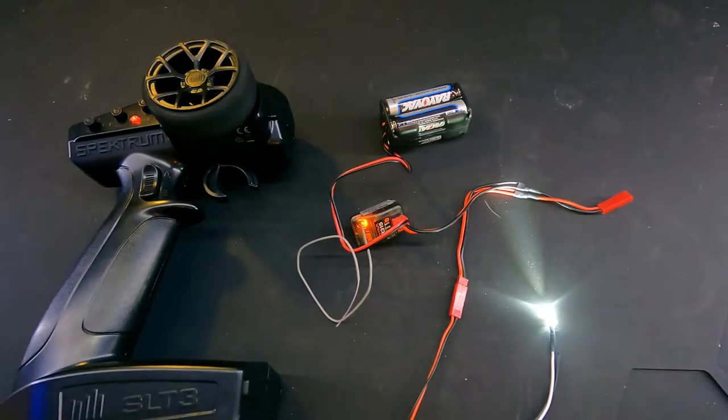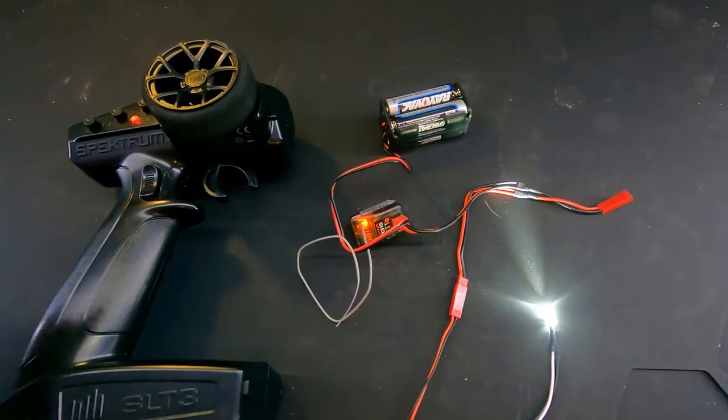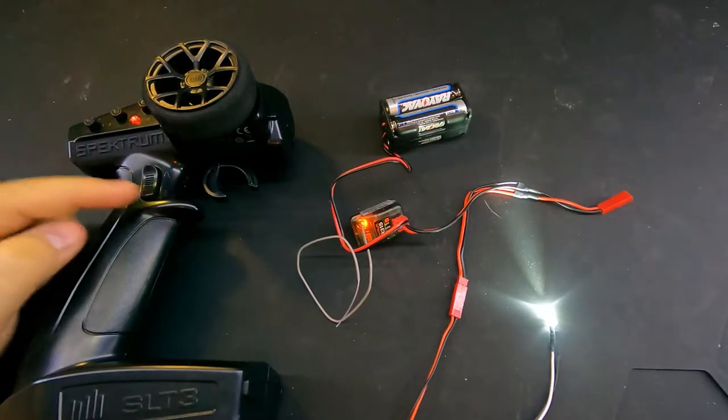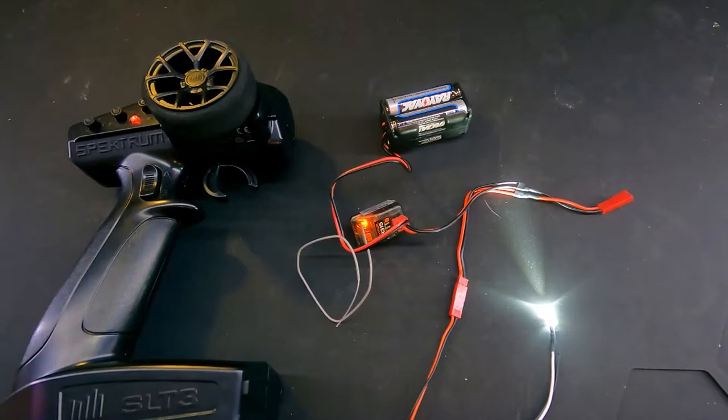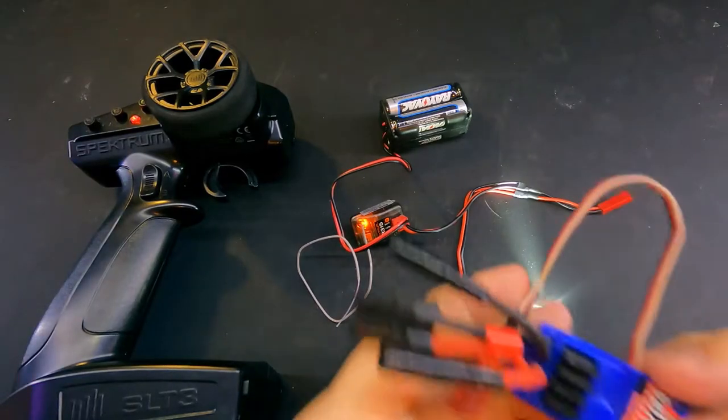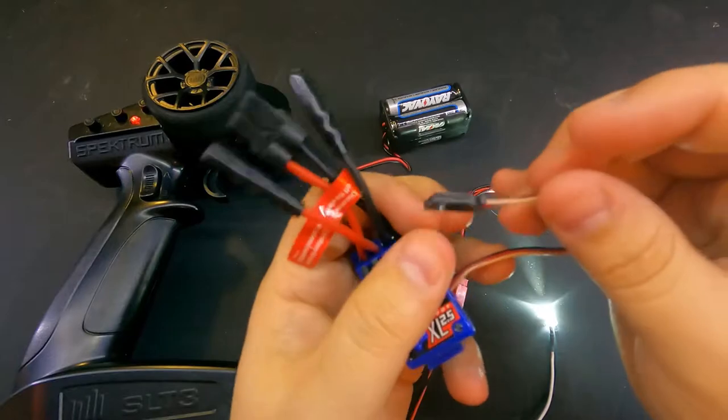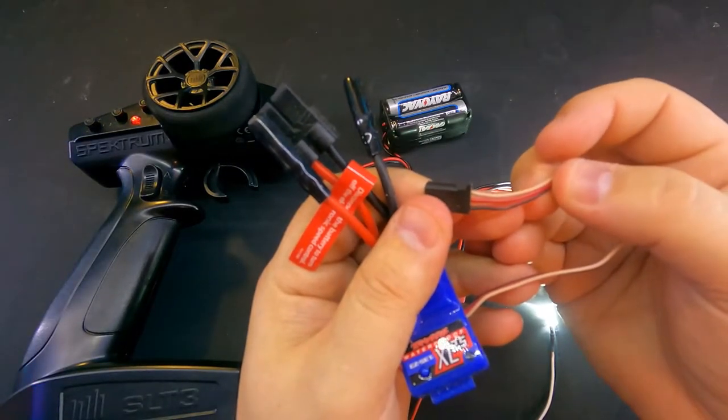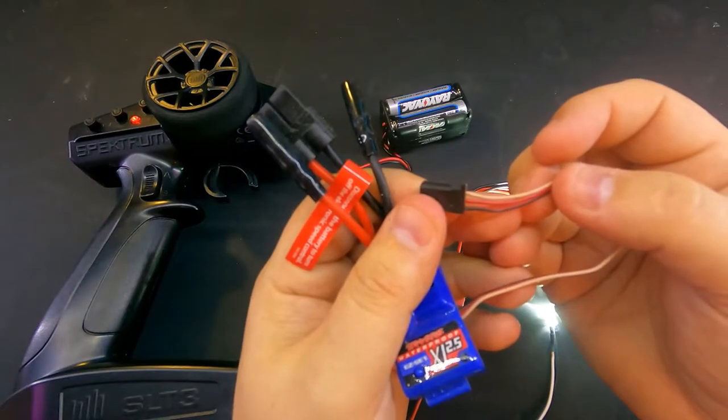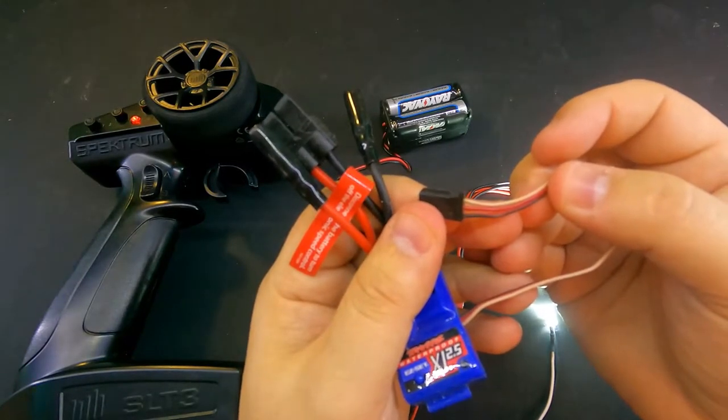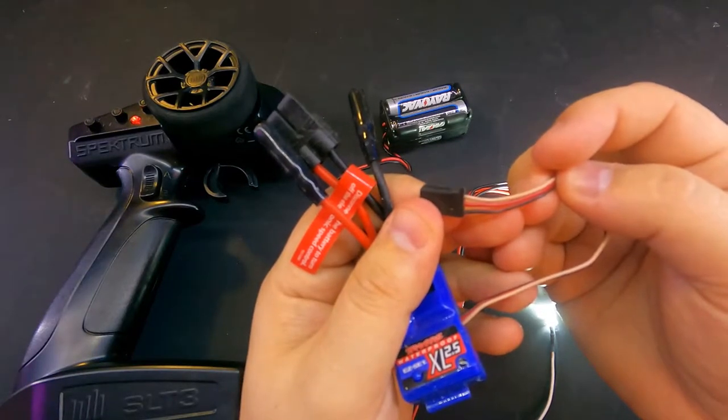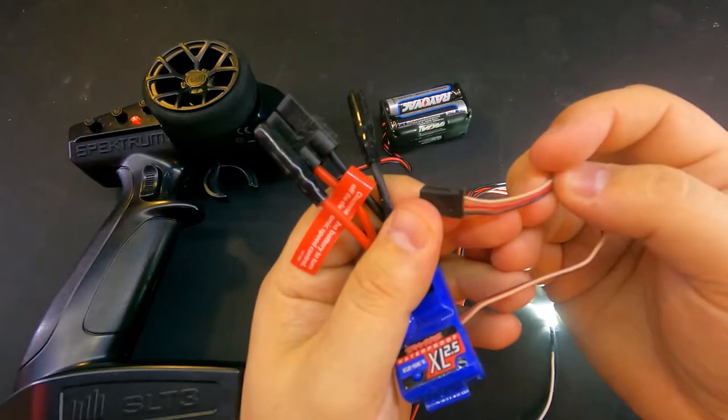Now, you'll notice this light kit is already powered up, but when we use the function in the radio, it doesn't change anything. This is because a traditional electronic component, such as a speed controller, has three cables: white, red, and black. A servo functions in exactly the same way. Your receiver is sending a pulse width modulation signal through this white wire, telling the onboard computer to do something.